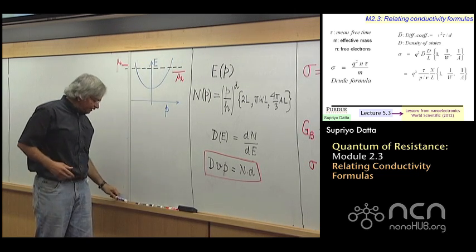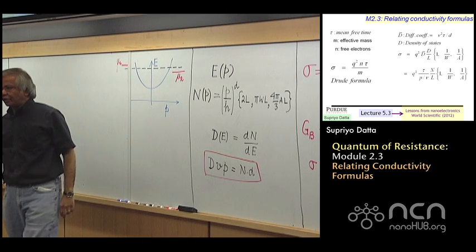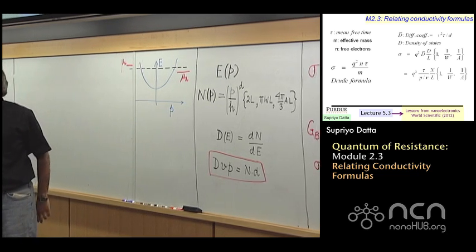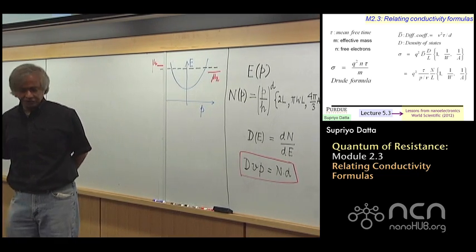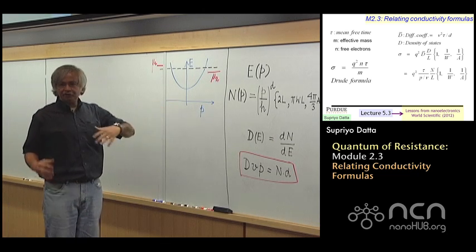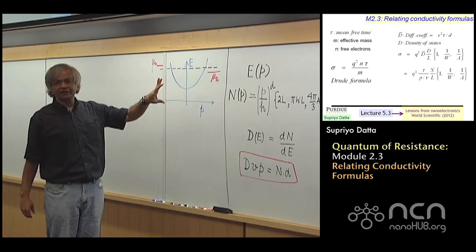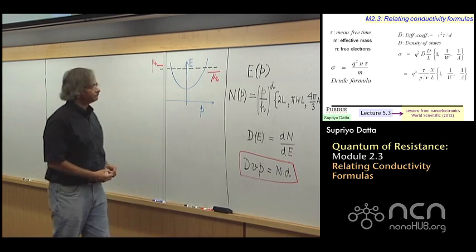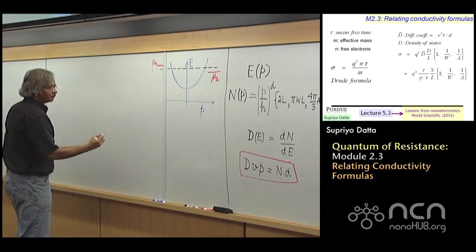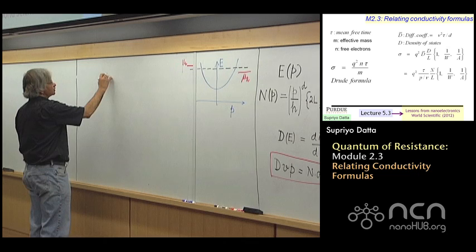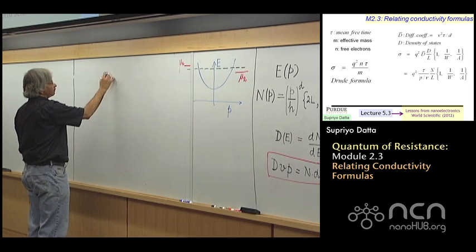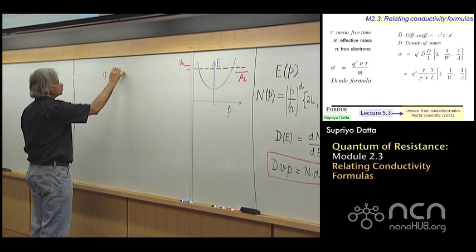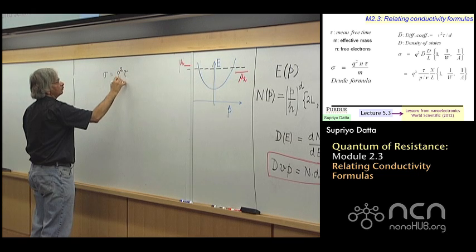Now on the other hand, the textbook way of obtaining conductivity would give you a very different looking expression for conductivity. And this is known as the Drude formula. So the expression that you would normally see in the literature would look something like this. Sigma is equal to q squared tau over m.